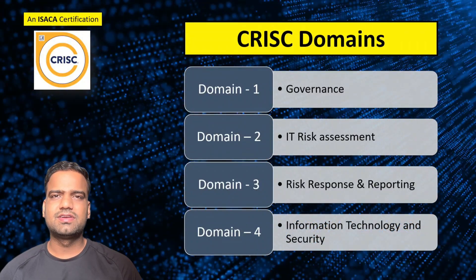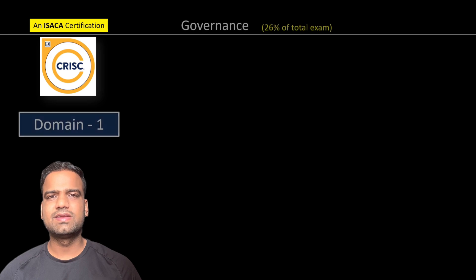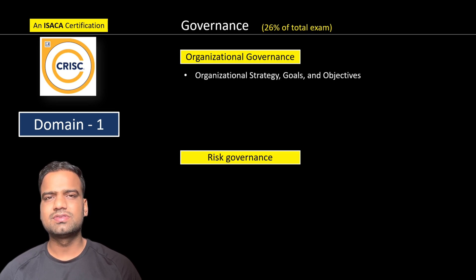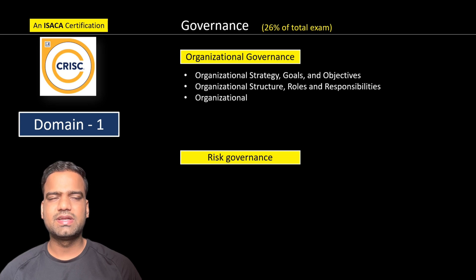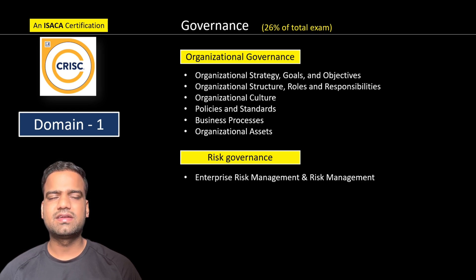I started with domain one, but as usual, like any other certification, domain one is always boring. Domain one in C-CRISC talks about organizational and risk governance. Chapters covered in organizational governance include organizational strategy, goals and objectives, organizational structure, roles and responsibilities, organizational culture, policies and standards, business processes, and organizational assets. Risk governance talks about enterprise risk management, risk management frameworks, and the three lines of defense.